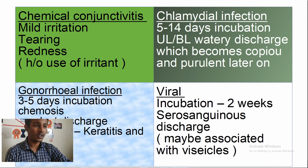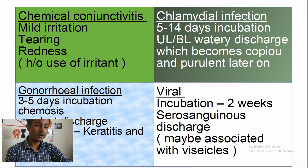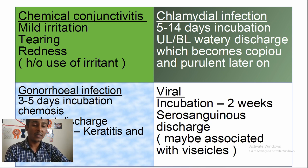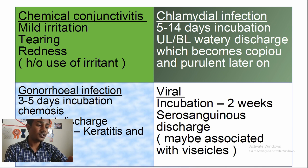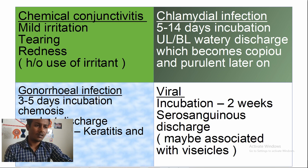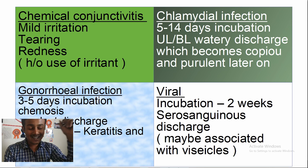Chlamydia trachomatis presents with bilateral or unilateral watery discharge that becomes copious and purulent later. For gonococcal infection, the incubation is 3 to 5 days — that's essentially immediate. If it's immediate, it's Neisseria gonorrhea: chemosis, purulent discharge, and associated keratitis and corneal perforation — gonorrhea is very dangerous. For viral HSV-2, the incubation is about 2 weeks, and you will have vesicle formation, which is the typical presentation of herpes simplex virus.